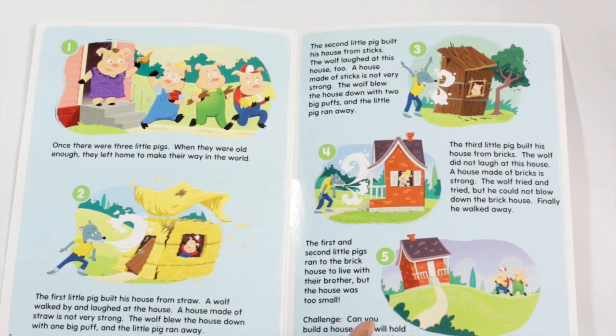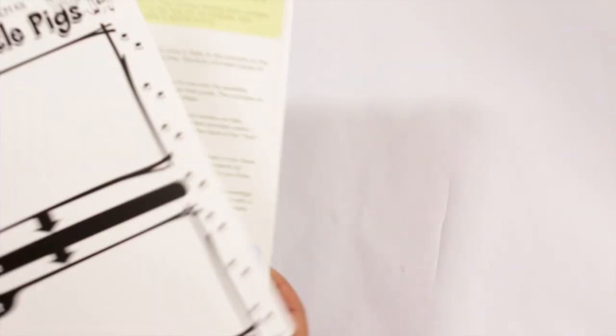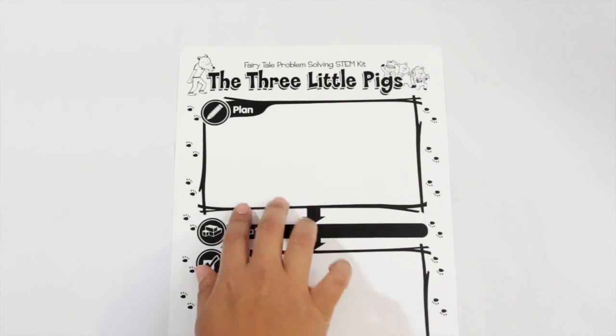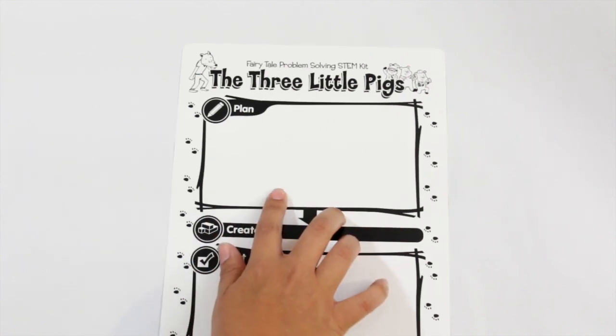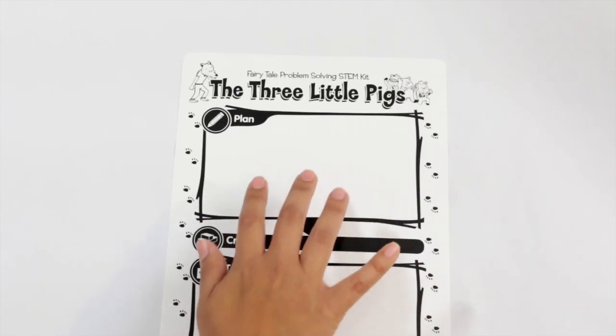When you start to talk about how the houses weren't able to withstand and why and why they fell over, you start the fact-finding process on how to create a bigger and better house, right? That's where the fun comes in and you start to use this great reproducible. You encourage your children to draw a picture of what a good house would look like using all the materials in the kit. And you get them to conceptualize what they would look like here.